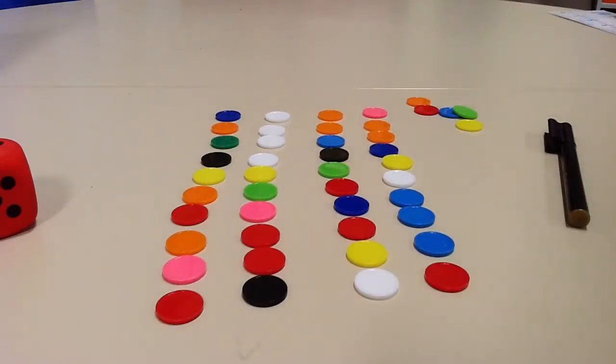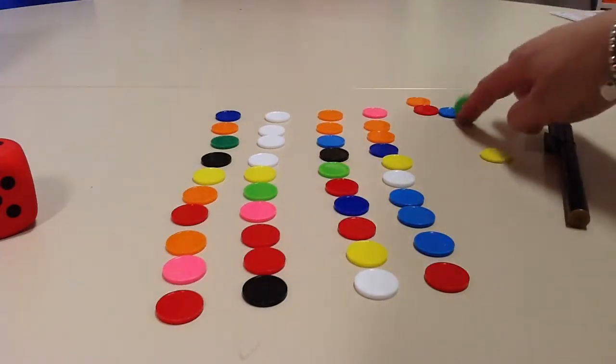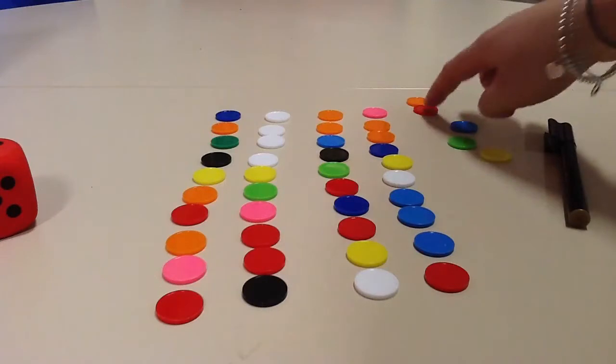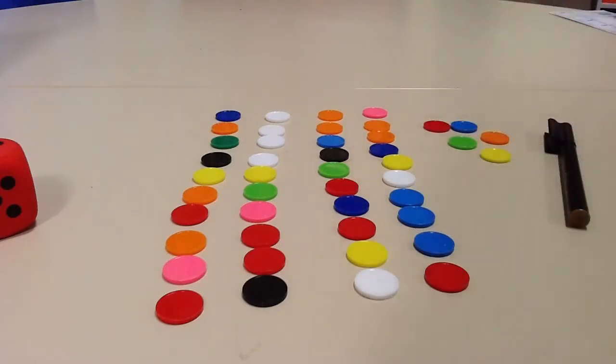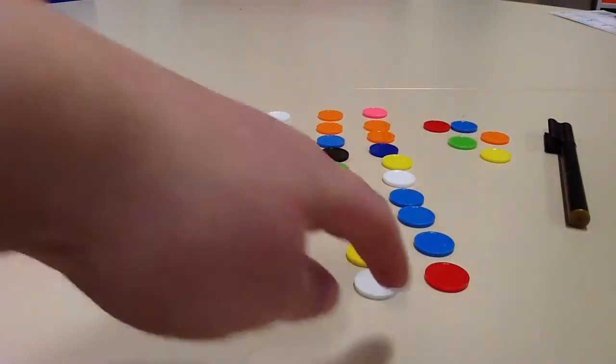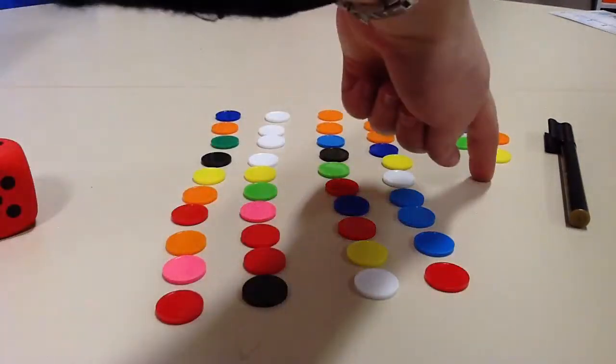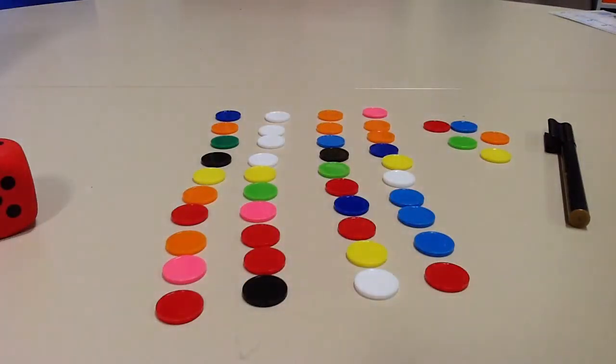That's four groups of ten and there are 1, 2, 3, 4, 5 left over. So I have 4 tens and 5, which is 45.